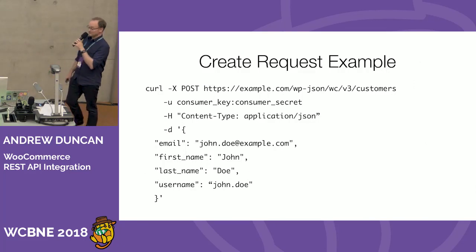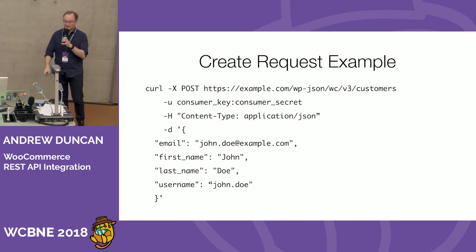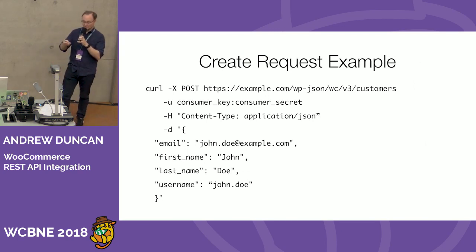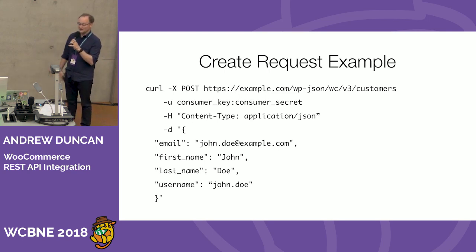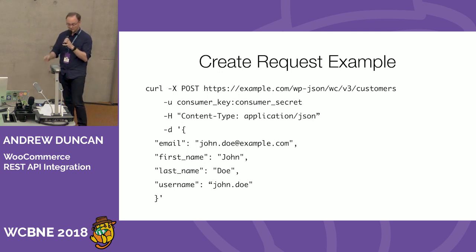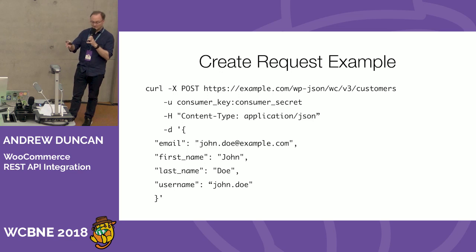Here's a curl example of a create request. You can see it's doing an HTTP POST request to the customers endpoint with 'v3' in the URL indicating which version of the API you're referencing. You've got your username and password — that's the consumer key and secret — the Content-Type header, and then the JSON data with email, first name, last name, and username.